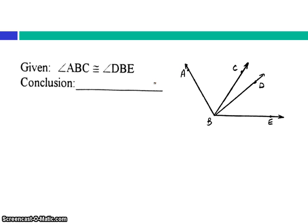Here's an example of a problem. I know angle ABC is congruent to angle DBE. Well, like we looked at in class, I would then be able to say angle ABD is congruent to angle CBE. And that's through our addition property.